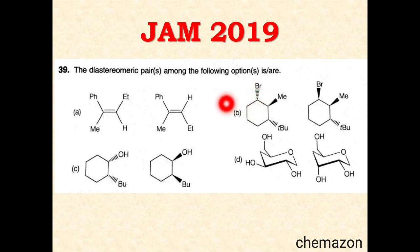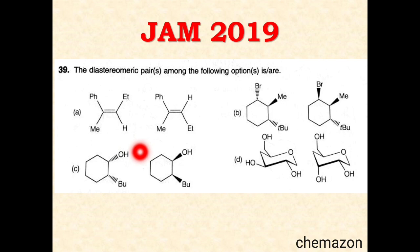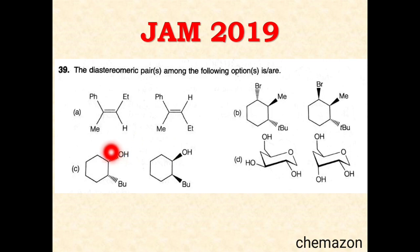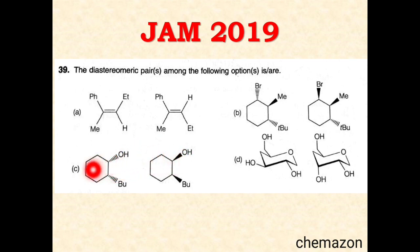Option B is also a diastereomer. Option C is a di-substituted cyclohexane with a hydroxyl group and a butyl group. In the second molecule both groups that were away from you are now coming towards you, meaning the absolute configuration at both carbons is changed. Such molecules are called enantiomers — they are non-superimposable mirror images — so this is not a diastereomeric pair.